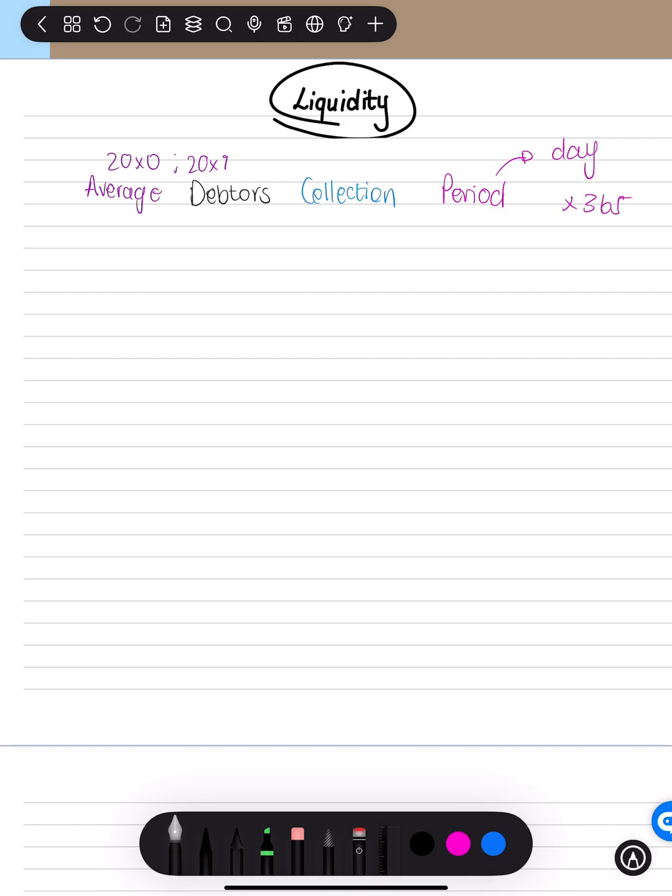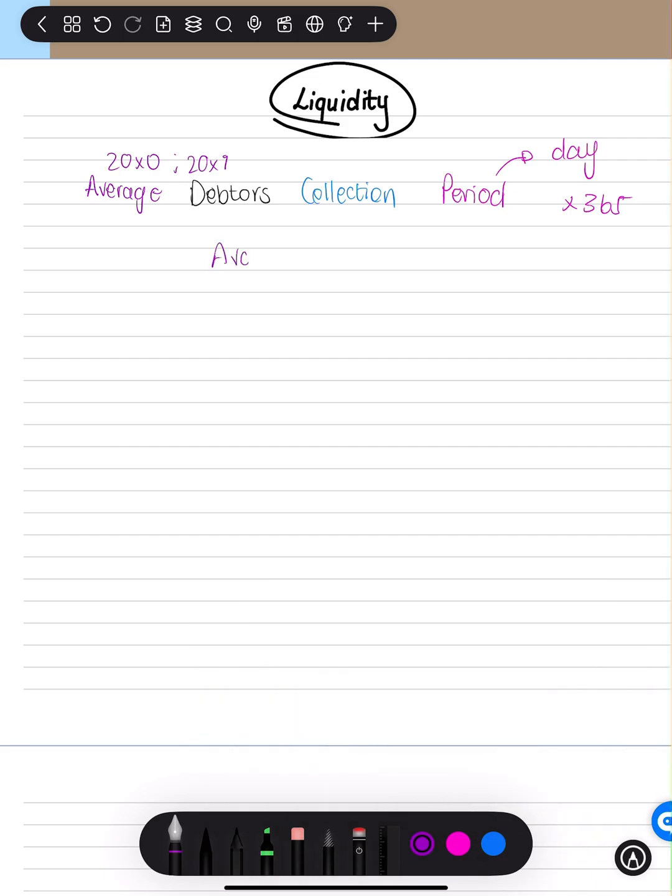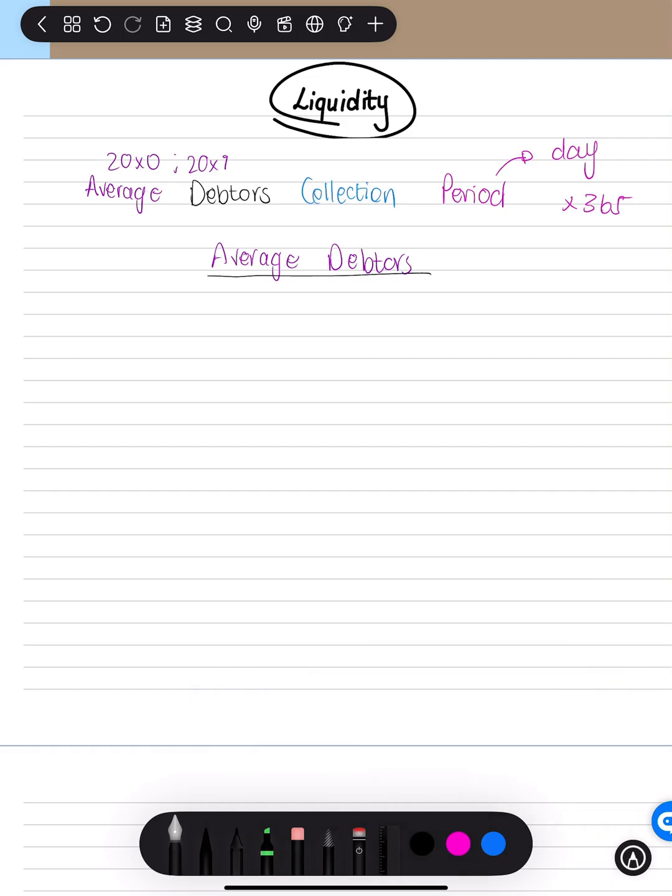So what is the formula? The formula says average debtors all over credit sales. Because debtors only buy on credit.